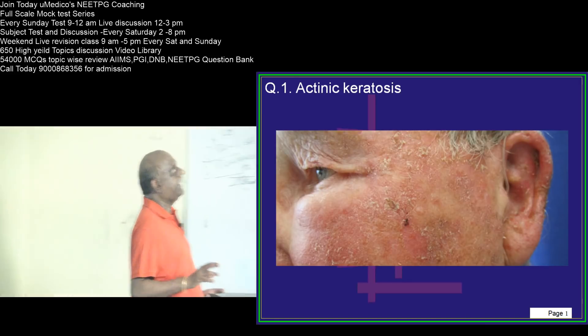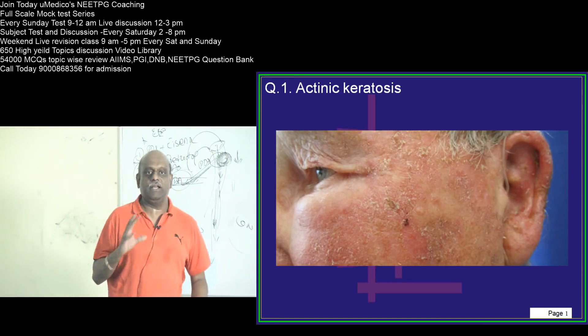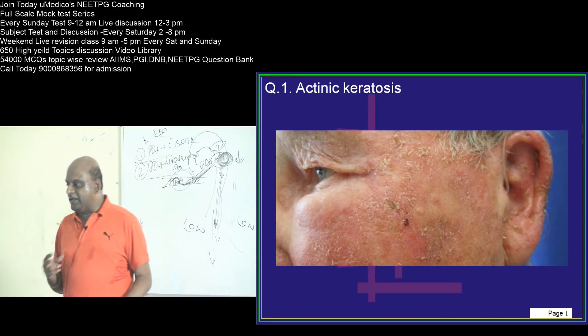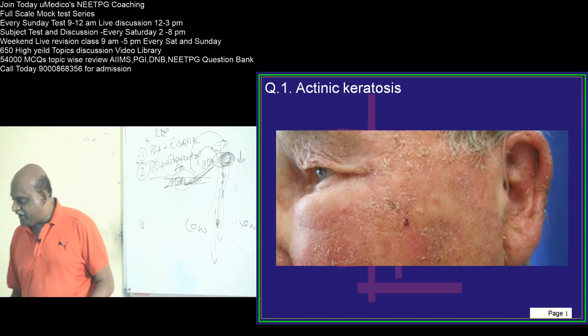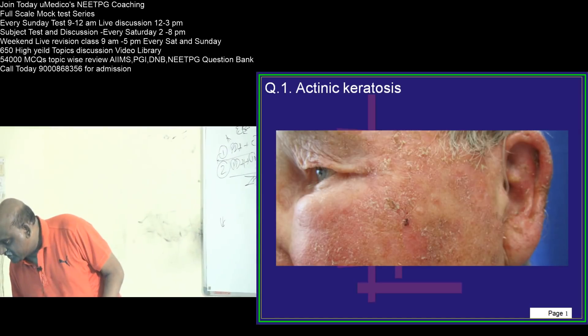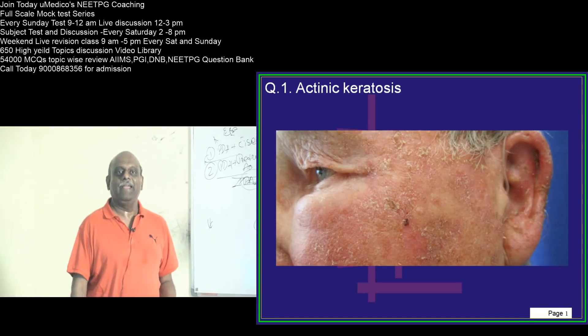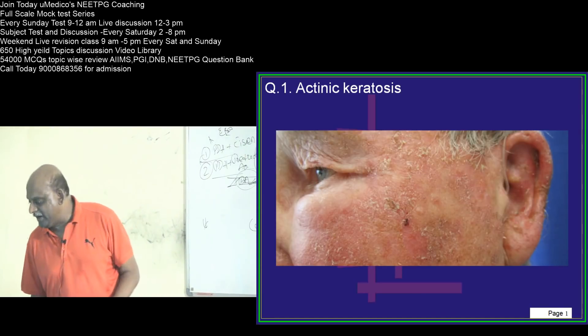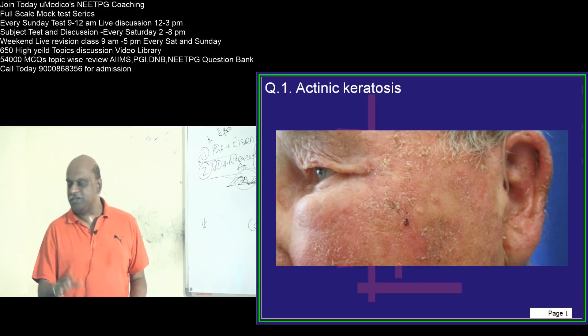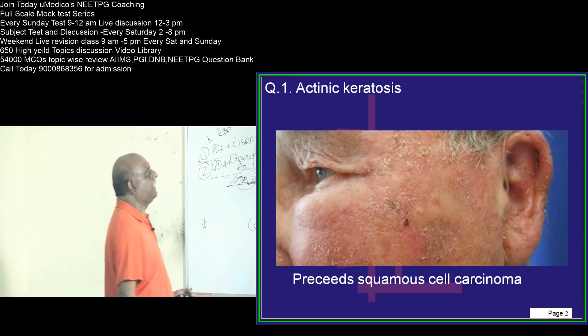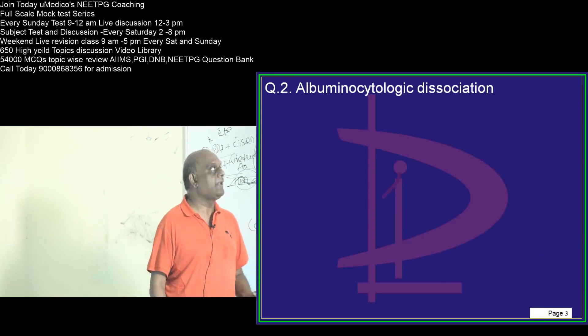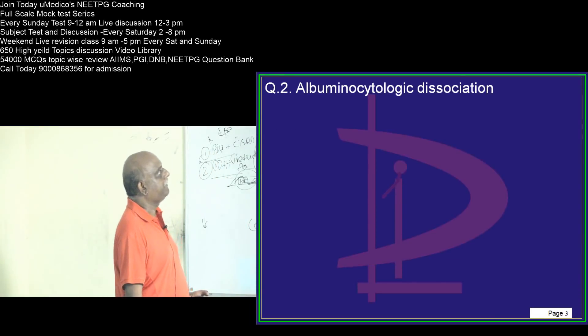What is the condition to which actinic keratosis predisposes? Very good. Shah Huzafi is absolutely right — squamous cell carcinoma. Actinic keratosis precedes squamous cell carcinoma.